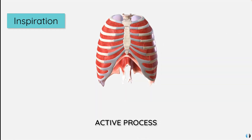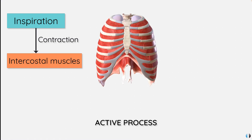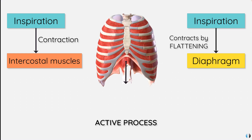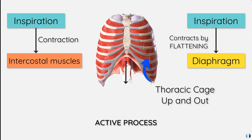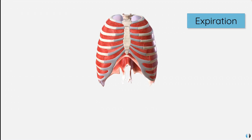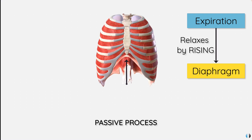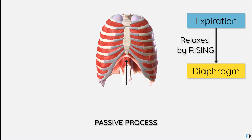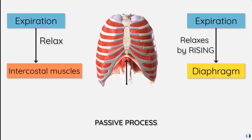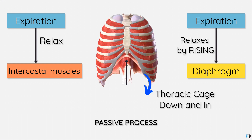Inspiration is an active process requiring the contraction of those muscles. When the intercostal muscles contract and the diaphragm contracts by flattening, it pulls the thoracic cage up and out. Now we can forcefully expire, but on the whole expiration is a passive process requiring the relaxation of those muscles — when the diaphragm relaxes by rising and the intercostal muscles relax, the thoracic cage moves down and in.